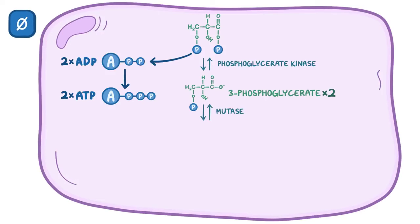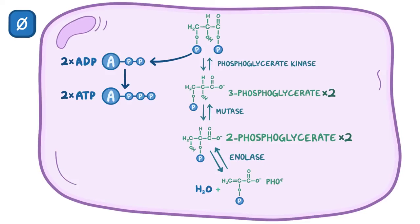Next, an enzyme called a mutase moves the phosphate on 3-phosphoglycerate to the second carbon, making 2-phosphoglycerate. After that, an enzyme called enolase removes a water molecule from 2-phosphoglycerate and makes phosphoenolpyruvate, or PEP.